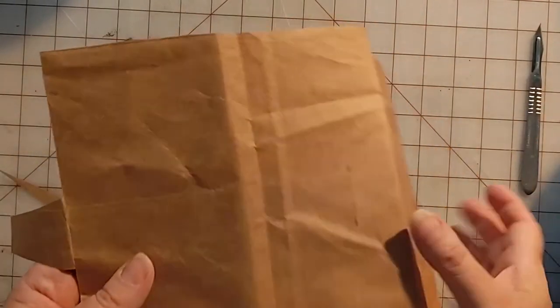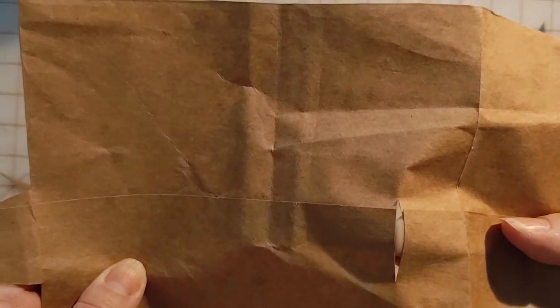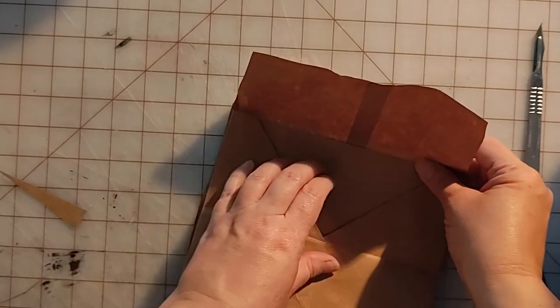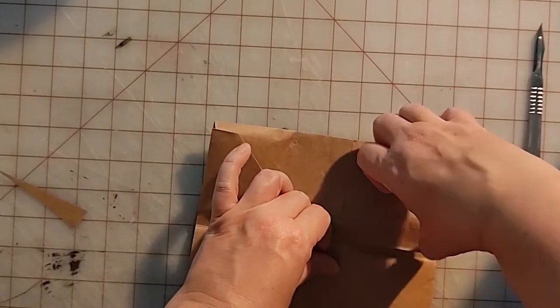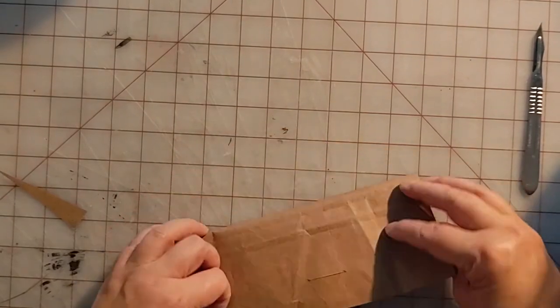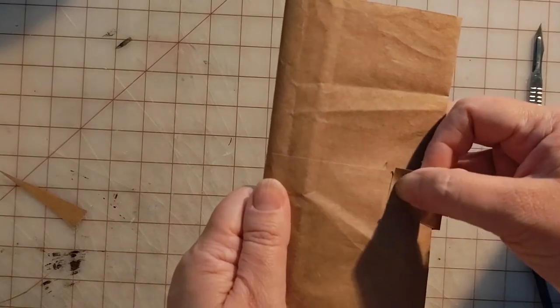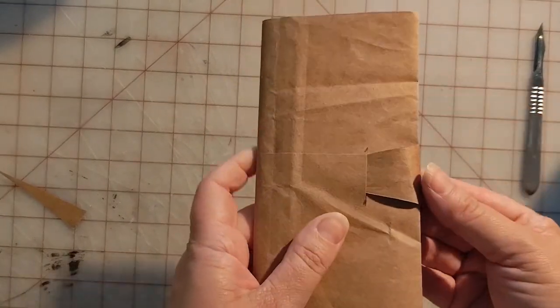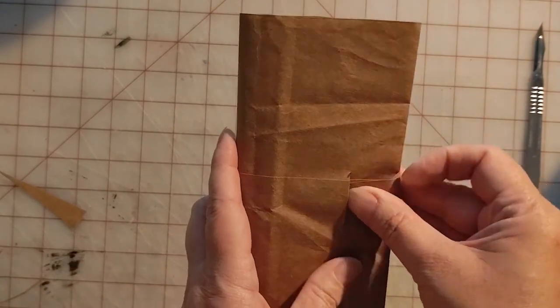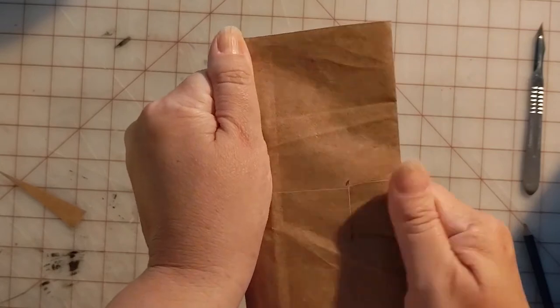And cut between those lines. And like I said, you can use a pair of scissors. So now I have a slit. I'm putting my cover back on. So now that tab that I created from the inside back cover can slide into my front cover and keep my book closed.